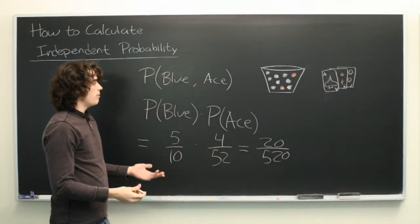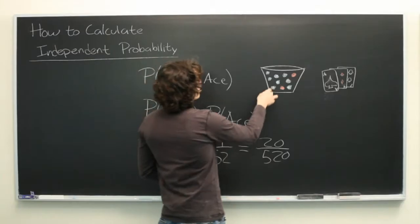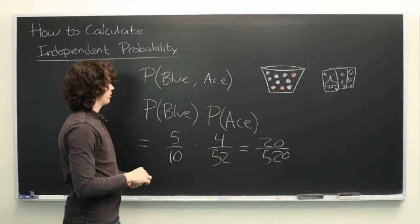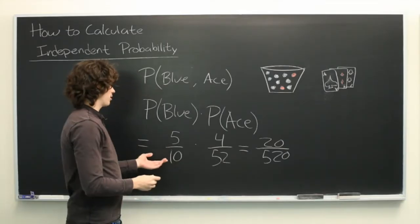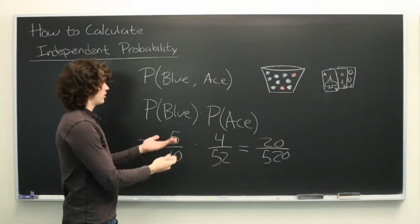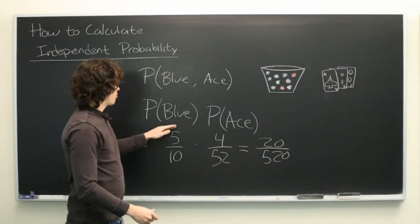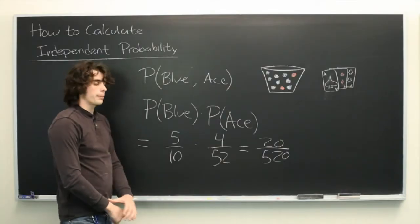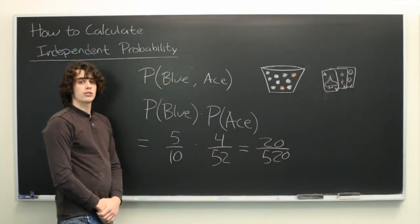If the events were dependent in any way — for example, if we were drawing two balls from this bucket without replacement — then it would be a little bit trickier to calculate the probability. But since they're completely independent, all we need to do is calculate the two probabilities on their own, multiply them together, and then we're done. My name is Ryan Malloy, and we've just discussed how to calculate independent probability.